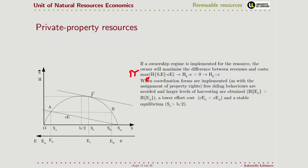So if we see it graphically, this corresponds to this point Ec, and we can see that when there is a single owner, the level of harvesting is higher than under free access, and the equilibrium is stable because it's on the right of B over 2, and the effort required to obtain the same amount of output that we could have in open access is much lower than EA.